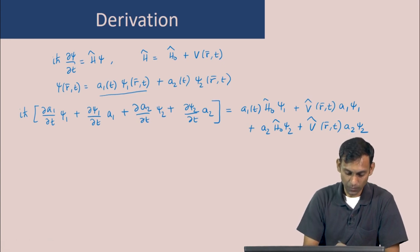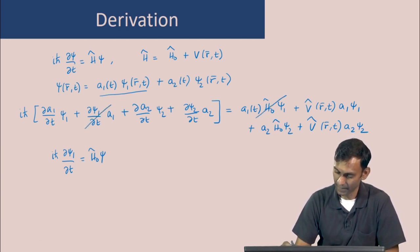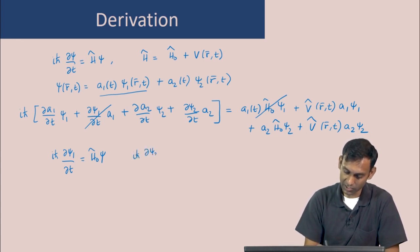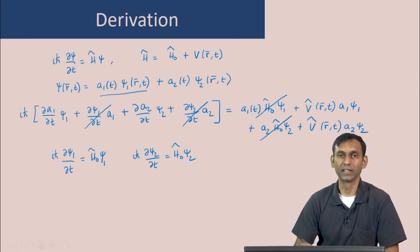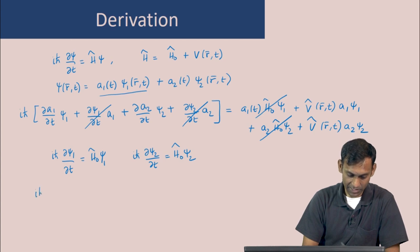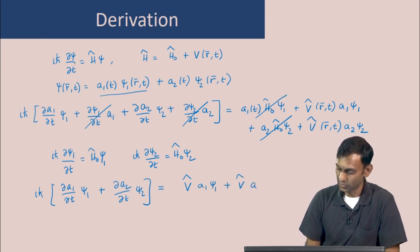Since ψ1 and ψ2 are solutions of the Schrödinger equation, iℏ ∂ψ1/∂t = H₀ψ1, we can cancel these two terms on both sides. Similarly, using iℏ ∂ψ2/∂t = H₀ψ2, we cancel the corresponding terms. So now there are two terms on each side: iℏ[∂a1/∂t · ψ1 + ∂a2/∂t · ψ2] = V·a1ψ1 + V·a2ψ2.